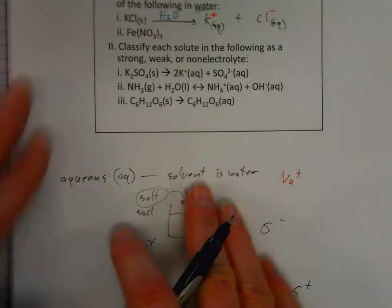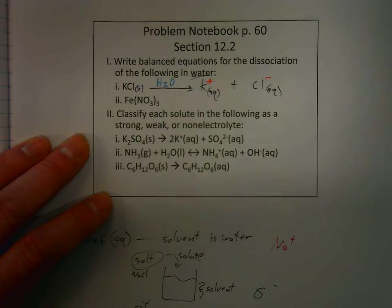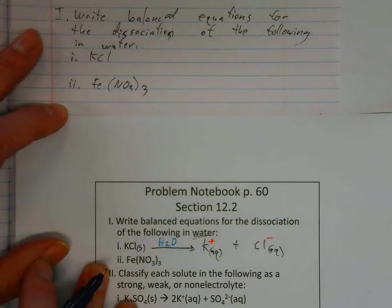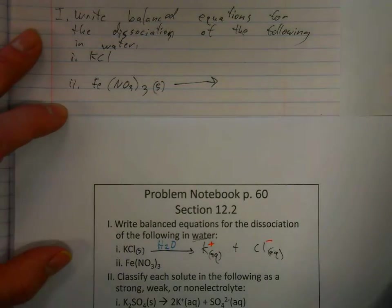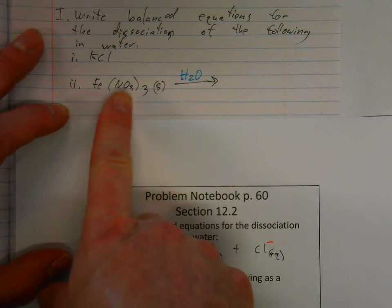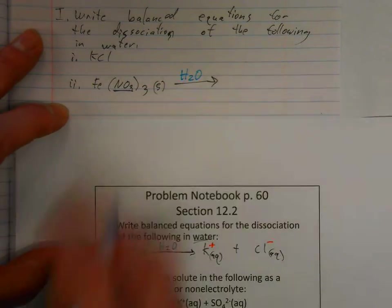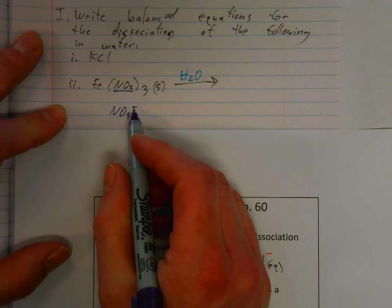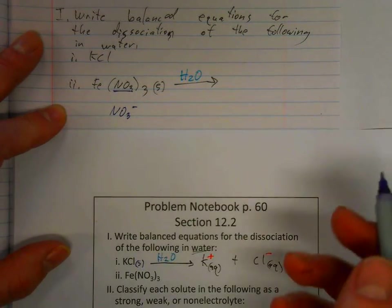The next example is iron(III) nitrate. Before it dissolves it is a solid, and it's going to dissolve in water. An important thing to remember is that NO₃ is a polyatomic ion — nitrate — with a charge of negative one. We need to remember that charge, or it will throw everything off. There are three nitrate ions in this compound.